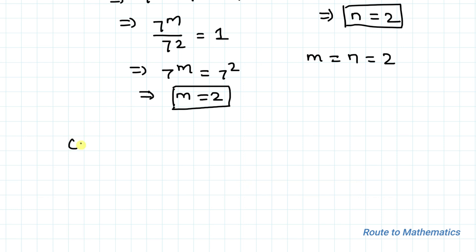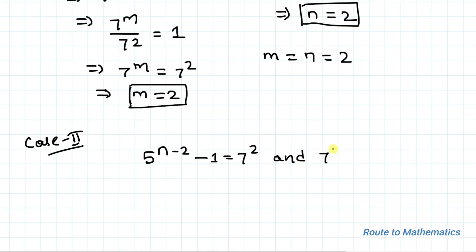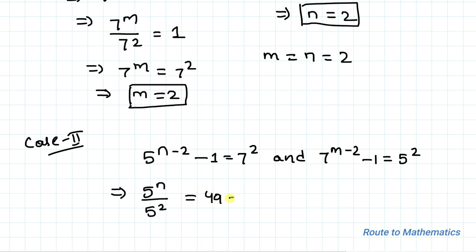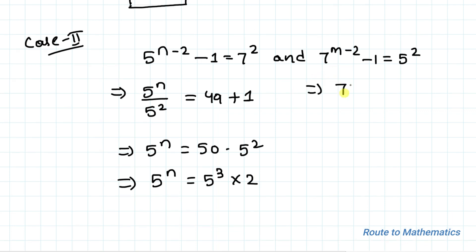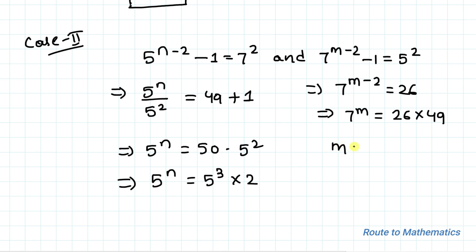Now let's proceed for the second condition. When 5 to the power n minus 2 minus 1 equals to 7 squared and 7 to the power m minus 2 minus 1 equals to 5 squared, let's solve for m and n. This implies 5 to the power n divided by 5 squared equals to 49 plus 1, so 5 to the power n equals to 50 multiplied with 5 squared, giving 5 to the power n equals to 5 cubed multiplied with 2. For m, 7 to the power m minus 2 equals to 26, so 7 to the power m equals to 26 multiplied with 49. Here both values of m and n are not integers, so they get discarded.